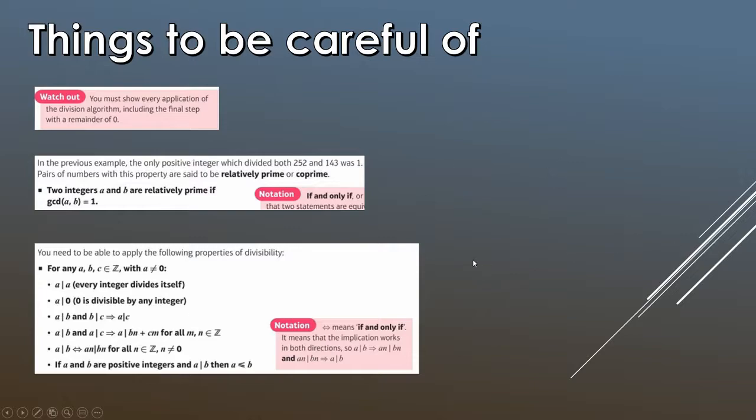For example 10 divides 10. A divides zero, so zero is divisible by any integer. So zero divides by 10, zero divides by 15, zero divides by anything. So just be aware of that fact. This is the transitivity, so A divides B and B divides C implies A divides C. So just some rules again.